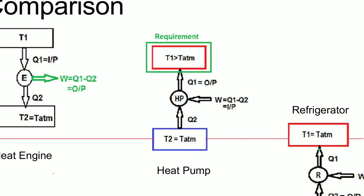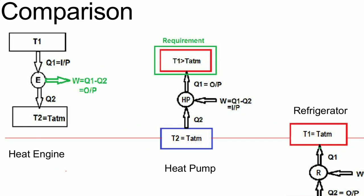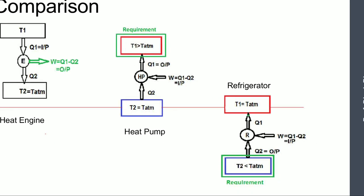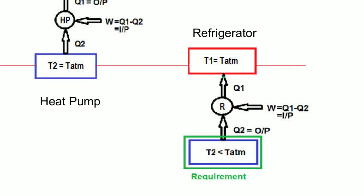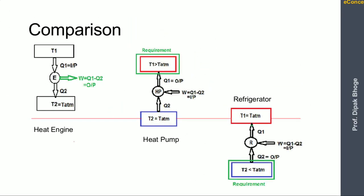T1 and T2 are the temperatures at which the heat engine operates. For the heat pump, the temperature achieved is greater than the atmospheric temperature — that is, T1 is the required temperature which is greater than atmospheric temperature.